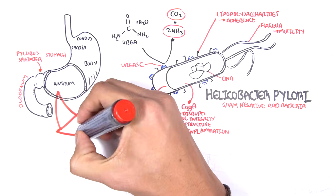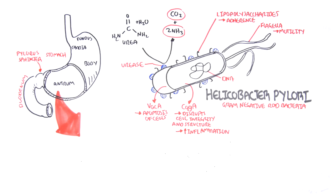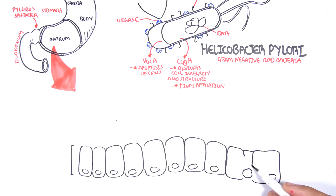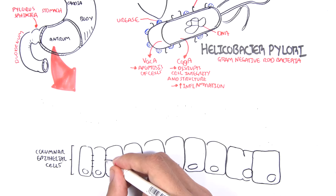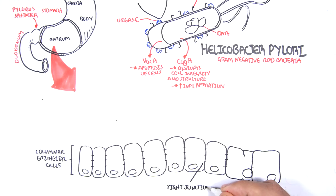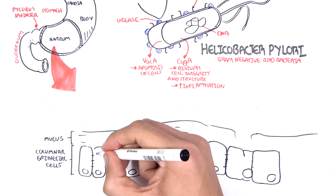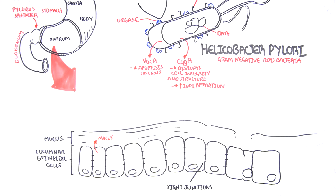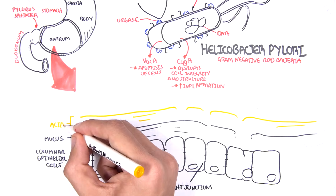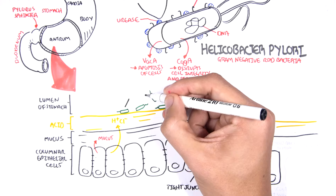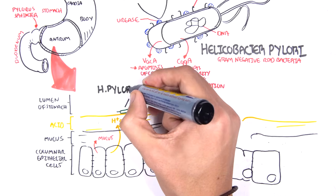About 50 percent of people have H. pylori living inside them as commensals. Zooming into the antrum, the stomach cells are composed of columnar epithelial cells with tight junctions between them. Above these cells we have a layer of mucus produced by goblet cells, which acts as a barrier from the hydrochloric acid layer above. The hydrochloric acid is produced by parietal cells, and above this acidic layer is the lumen of the stomach, where H. pylori resides.